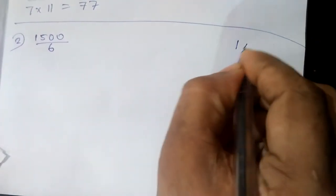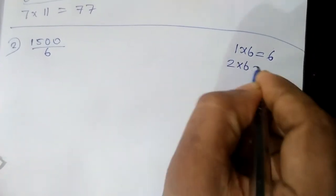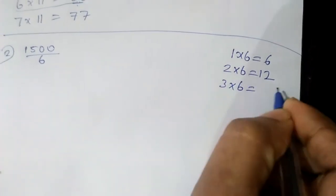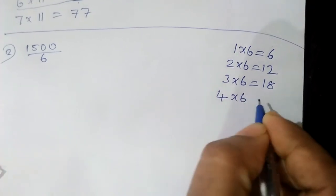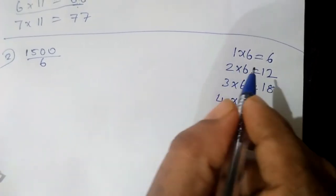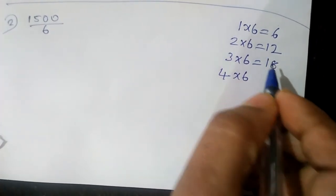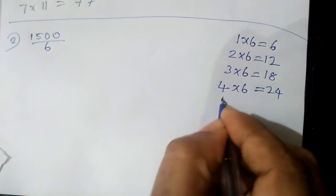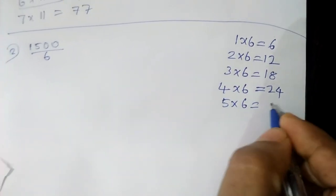It is 1 and 2, and 2 and 2, and 3 and 3, and 4 and 4. 4 into R is equal to 24, 5 into R is equal to 30.